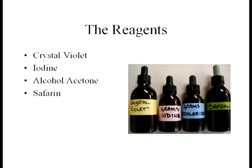There are four main reagents that are used in the gram staining technique. Crystal violet, which is a blue or purplish dye. Iodine, which is used to form a complex with crystal violet. Alcohol or acetone, or a mixture of the two, is used as a decolorizing agent. And then finally, safranin, which is a red or a pinkish colored dye.